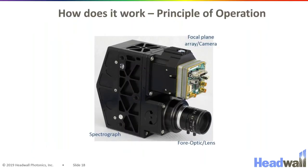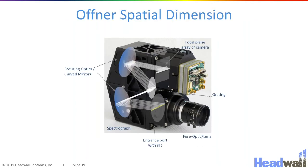So how do the optics of the system work to achieve this? If we cut away and see how the optics look on the inside, this fore-optic lens is projecting the image of your scene onto a slit right here. And that slit is then put into a set of two concave mirrors and one convex mirror, and that set of optics will re-image this slit onto the focal plane.